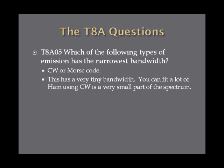Which of the following types of emission has the narrowest bandwidth? From all the answers on the exam, CW, which is also Morse code, has the narrowest bandwidth. It has a very, very small bandwidth, and you can fit a lot of stations using CW in a very small part of the spectrum. CW, as far as operating modes go, pretty much has the smallest bandwidth.